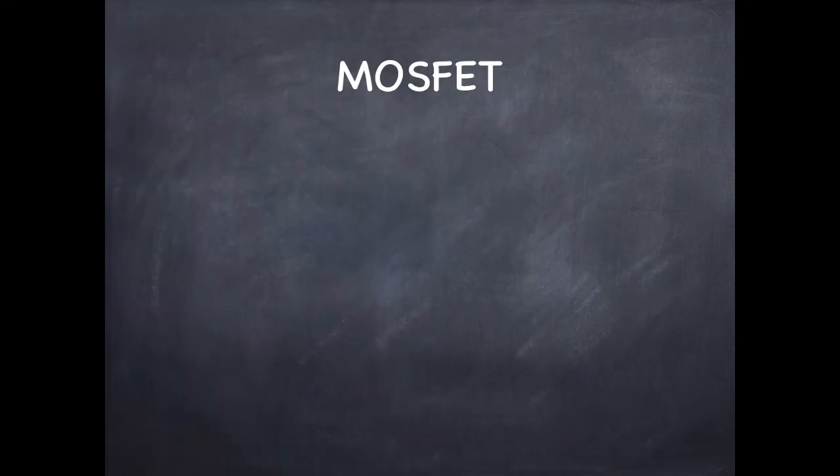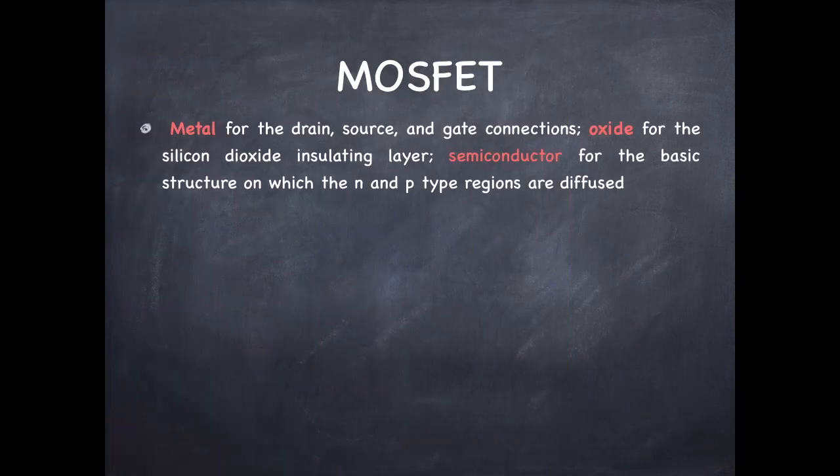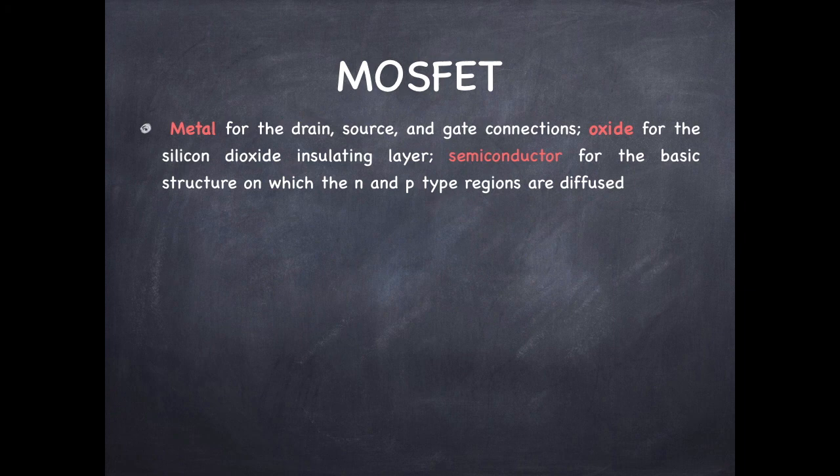Now coming to MOSFET and how it gets this name. The drain, source and gate connections, they are metals. Oxide basically is the silicon dioxide insulating layer which insulates gate from the channel.